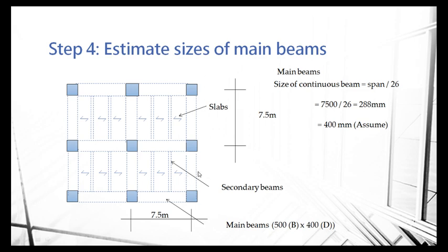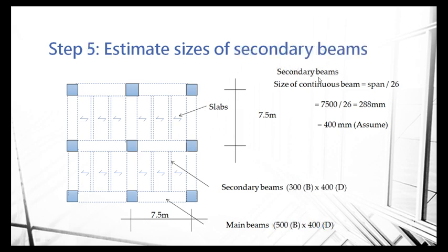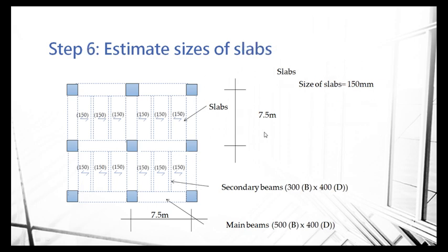For the width, normally you can say 500. The width and the depth — we normally care more about the depth, because the headroom is directly affected by the depth of the beam. We do the same for the secondary beams — they have the same spans, but we assume the width of the secondary beam can be smaller, because the loadings will be smaller than the main beam. Also, the main beam takes the wind load, meaning it needs to have a larger size. For the reinforced concrete slab, normally you can say 150mm — most of the time the size is 150.